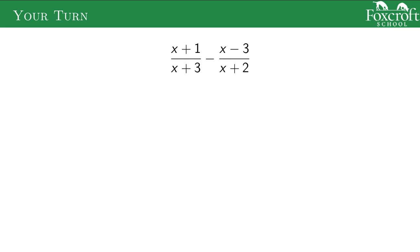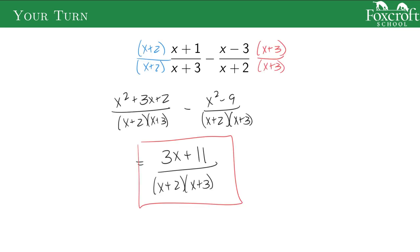Here's one for you to try on your own — subtract these two fractions. In the solution: first step, take x plus 3 and multiply it on the right-hand side; take x plus 2 and multiply it on the left-hand side, guaranteeing the bottoms are the same. FOIL out x plus 2 times x plus 1 to get the top of the left fraction. For x minus 3 times x plus 3 we get x squared minus 9. The most common mistake is forgetting the negative sign distributes to both terms — x squared minus x squared cancels away; 3x is the only x term; and 2 minus negative 9 becomes plus 9, so 2 plus 9 is 11, giving 3x plus 11 on top. There's no factoring to cancel, so that's the final answer.